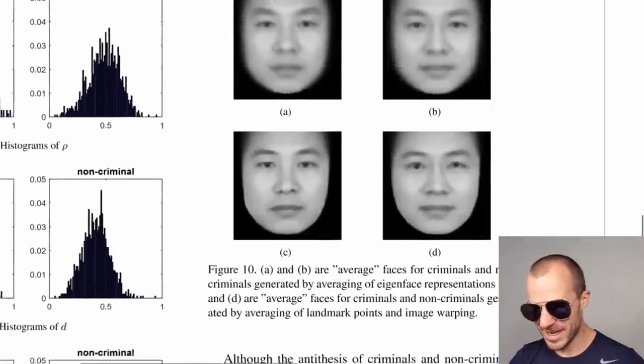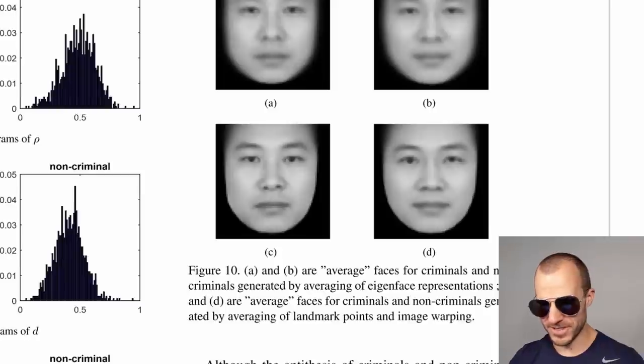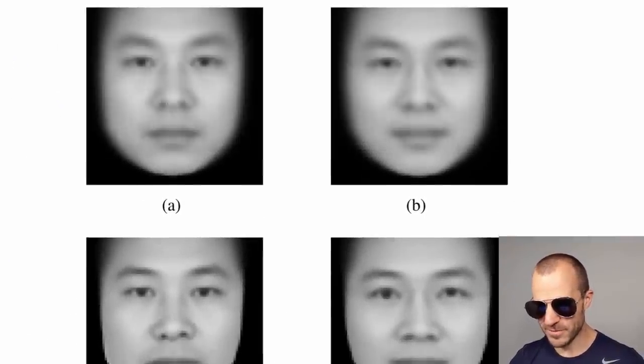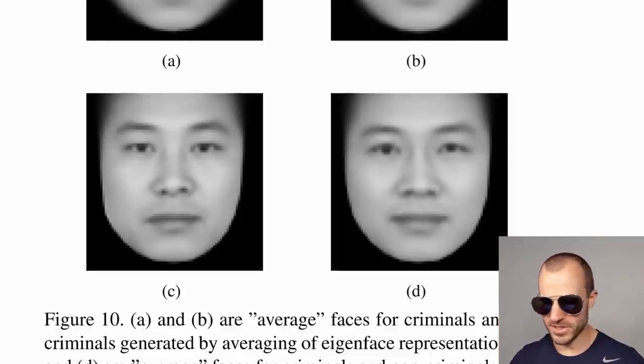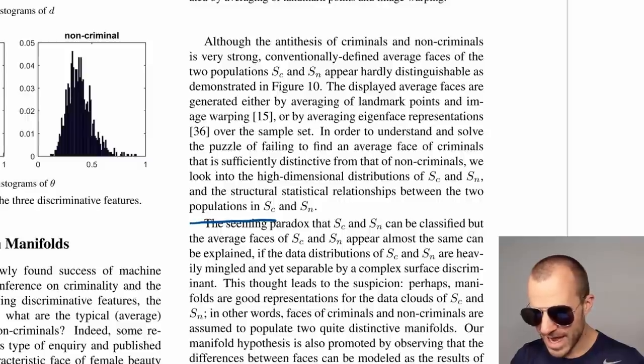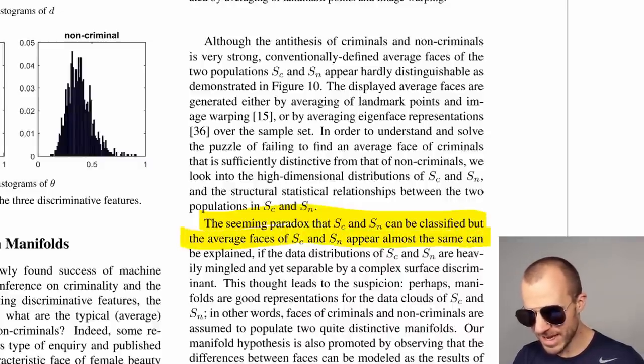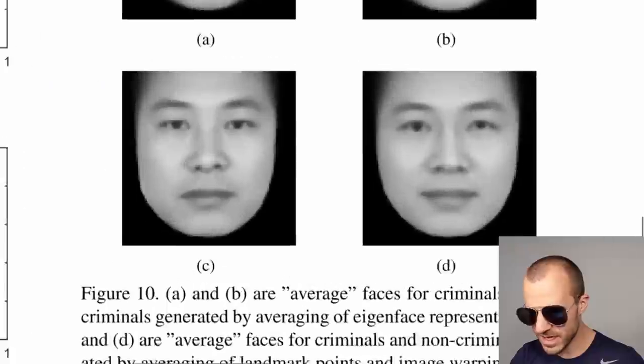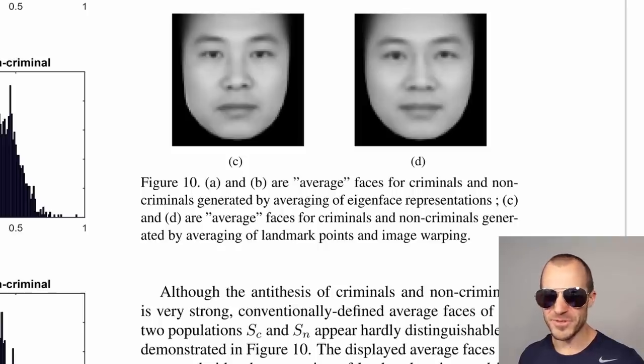They take the average faces for criminals and non-criminals — these are the average eigenfaces. And there's a seeming paradox: SC and SN can be classified, but the average faces appear almost the same. If you just overlay them, they're almost identical — there is no difference at all. I don't see a difference. I don't think these are the most honest of intentions.